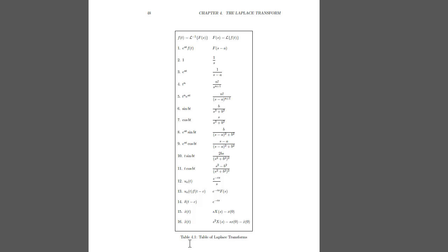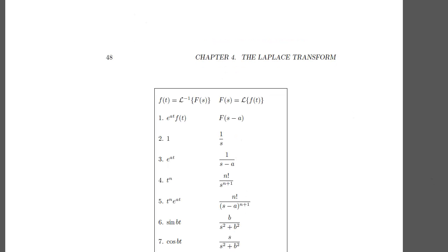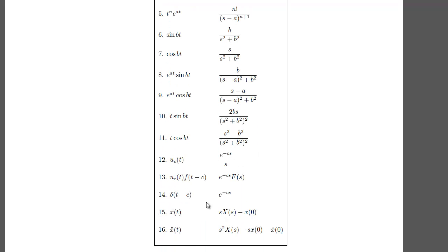Hopefully your professor will provide you a similar table. If we enlarge this table you'll see that we need to Laplace transform the derivatives x-dot and x-double-dot with x(0) equals 0 and x-dot(0) equals 0. The initial conditions go in here. The Laplace transform of x-dot is just s times the Laplace transform of x, and the Laplace transform of x-double-dot is just s-squared times the Laplace transform of x.